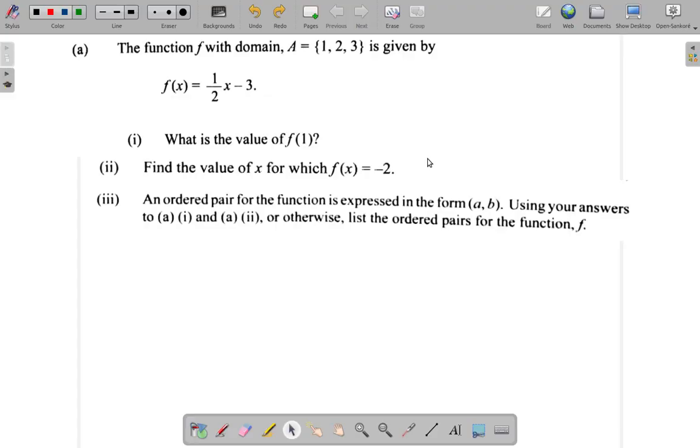We look at part A of question 4. It says the function f with domain A equal 1, 2, 3 is given by f of x is equal to half x minus 3.